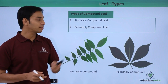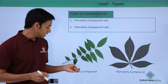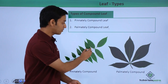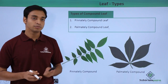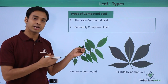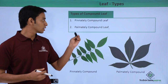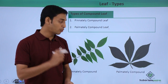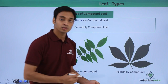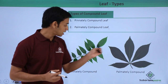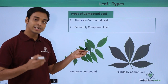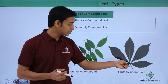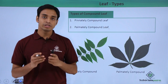These compound leaves can again be divided into two different types: the pinnately compound leaf and the palmately compound leaf. In pinnately compound leaves, the leaflets are attached to the common rachis or common axis. But in palmately compound leaves, all the leaflets are attached to a common point — here you can see the rachis or midrib — whereas in pinnately compound, the leaves are attached along the whole midrib.